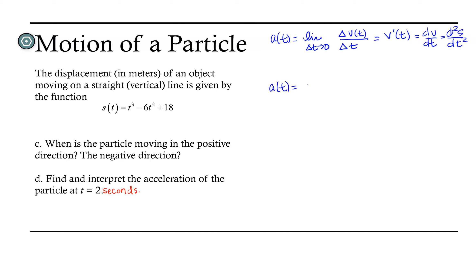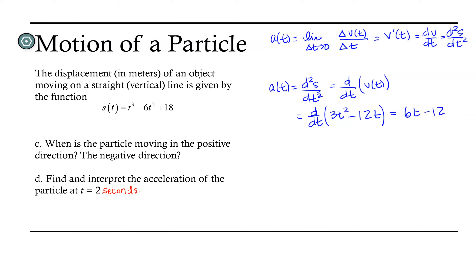Acceleration is the second derivative of position with respect to time, which is the derivative of velocity. We know the velocity function is 3t squared minus 12t, so the acceleration function is the derivative of that: 6t minus 12. Now that we have the acceleration function, let's evaluate it at t equals 2 seconds: 6 times 2 minus 12, which equals 0.